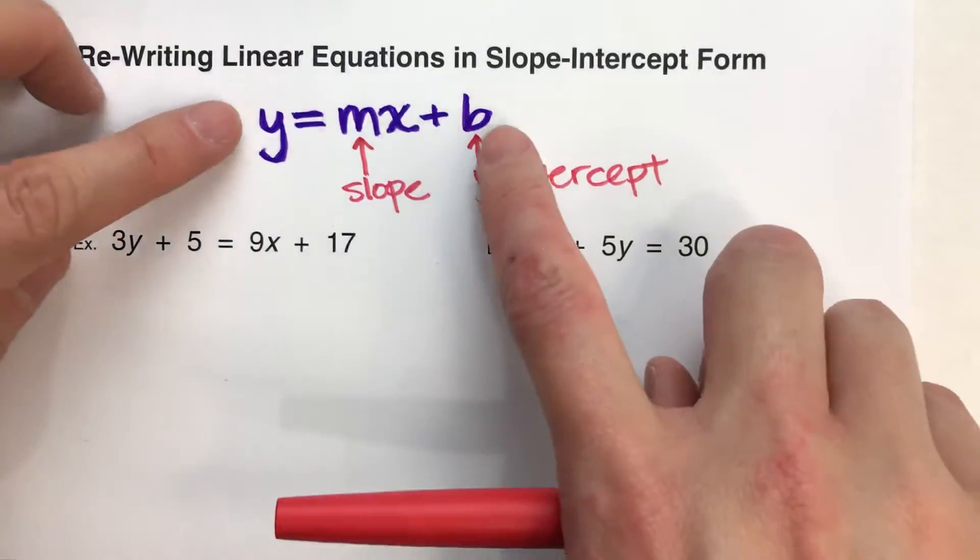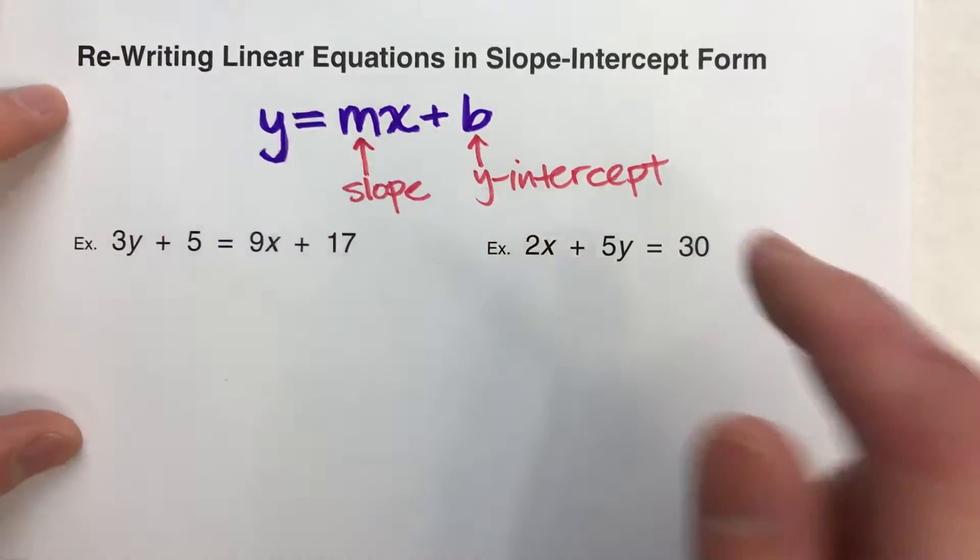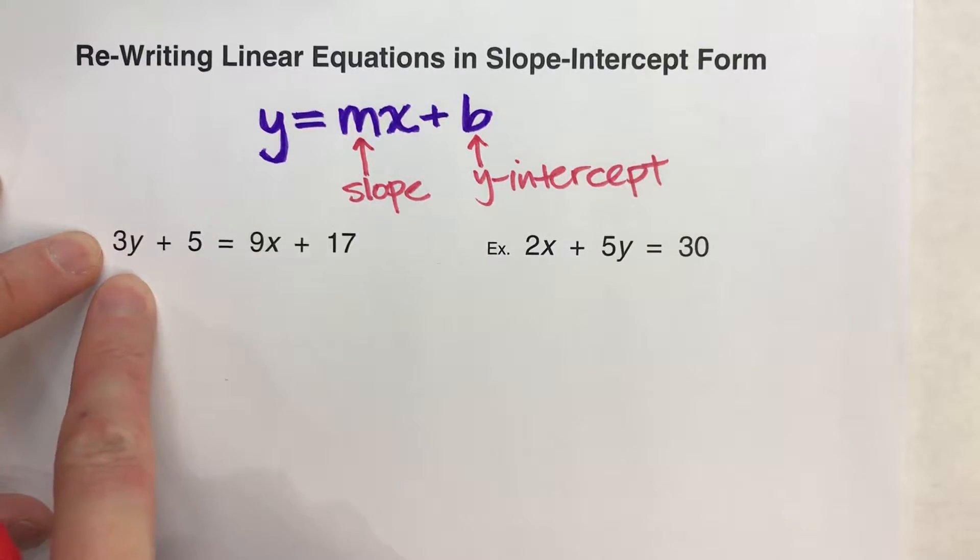First thing you need to notice is slope-intercept form has y by itself on one side of the equal sign. So, we're going to get y by itself.